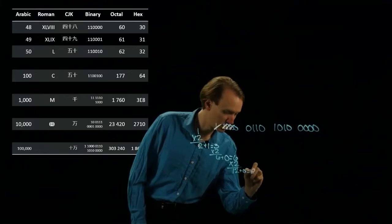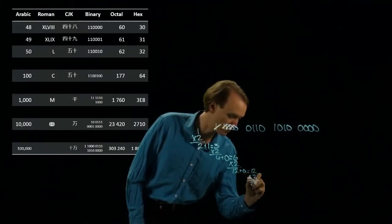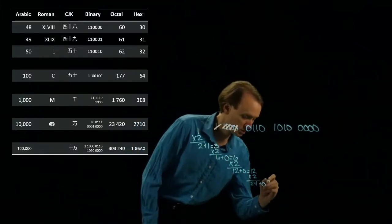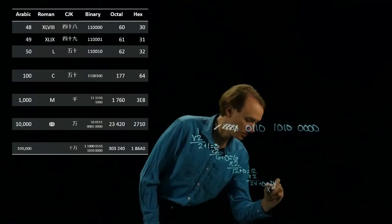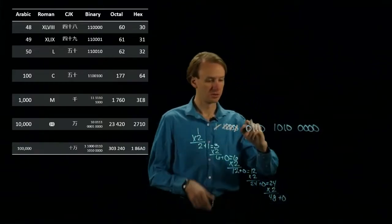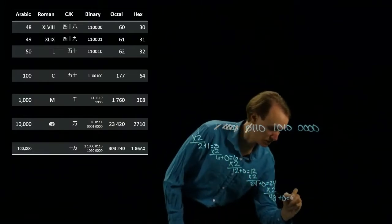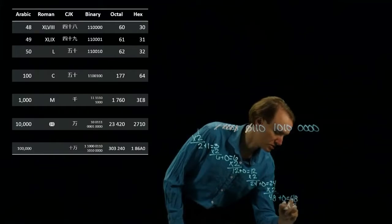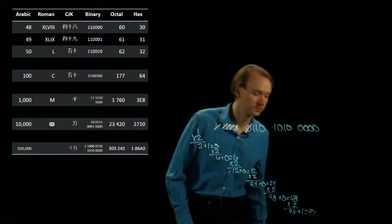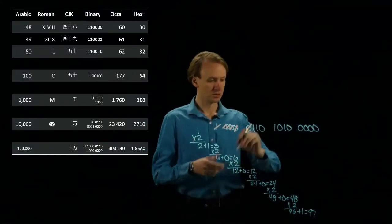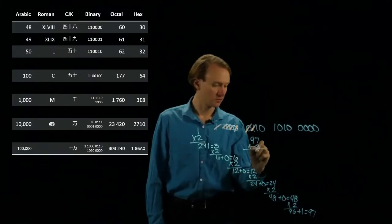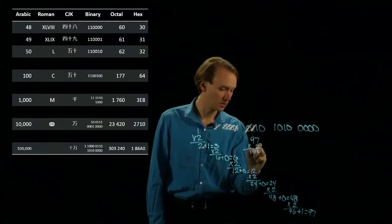This leaves me with 12, so I'll multiply by 2 and get 24. Then I'll add another 0, giving me 24 again, and multiply by 2 is 48. Add the next bit and multiply by 2 gives me 96. The next bit is a 1, so it's 97. And 97 times 2 gives me 194.